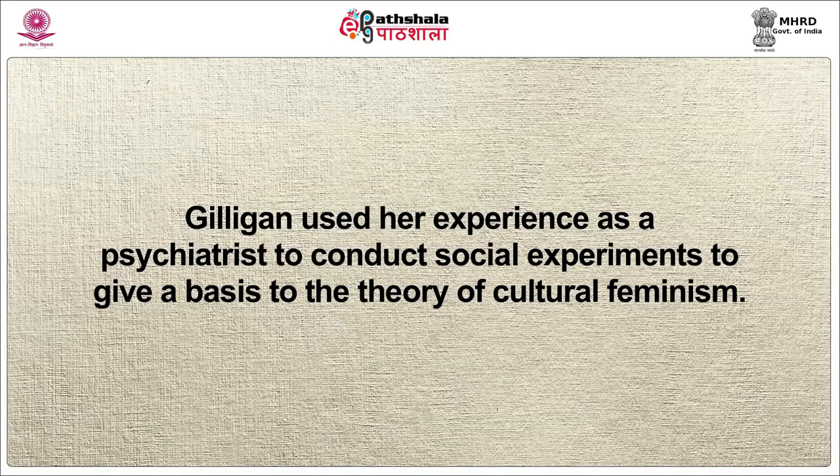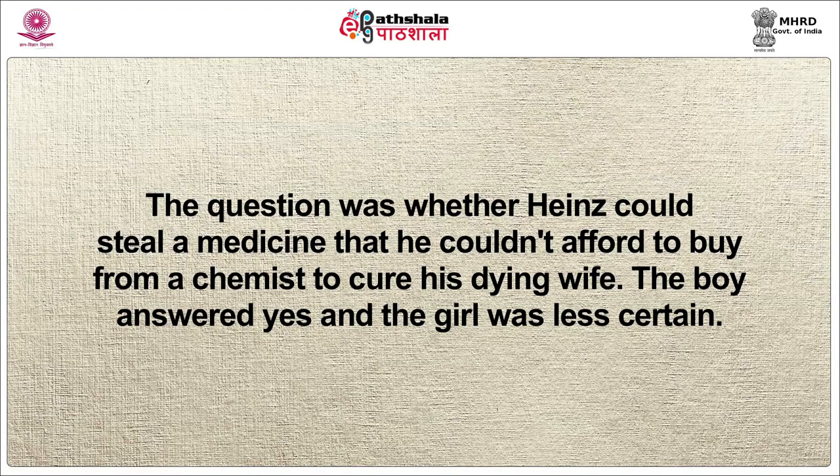Carol Gilligan's writings on the ethic of care and the ethic of rights aim to demonstrate that men and women think in different ways. She argues that men work on a system of rights typically between two individuals who are of similar status, whereas women have a system of care to understand and explain social relationships which are more complex. Gilligan used her experience as a psychiatrist to conduct social experiments to give a basis to the theory of cultural feminism. She relied on a study that asked both boys and girls a hypothetical question to highlight sociological differences between men and women's thinking, and how men and women engage differently with both social relationships and the legal system. The question was whether Heinz could steal a medicine that he couldn't afford to buy from a chemist to cure his dying wife.